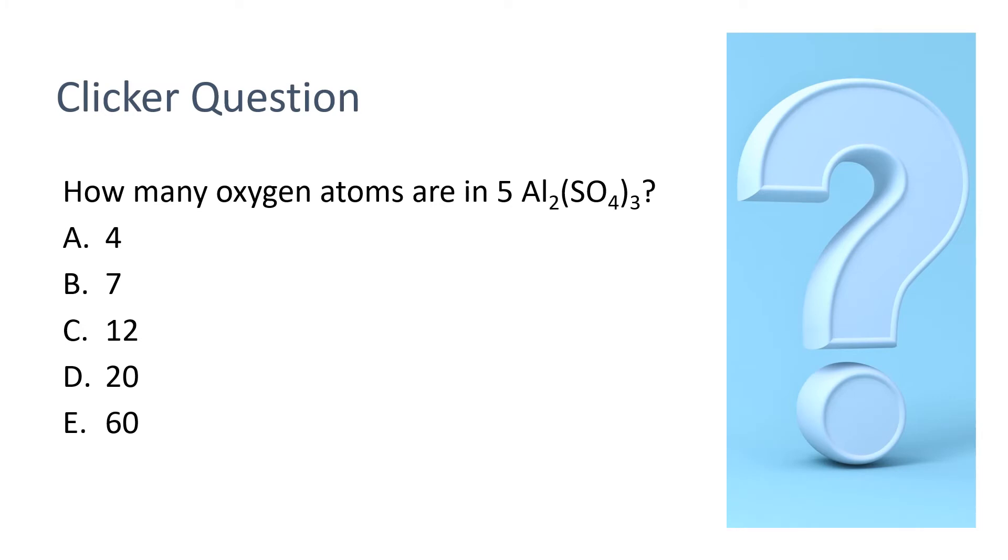This question asks us to determine how many atoms of oxygen are present in this expression, 5 Al2(SO4)3 or 5 aluminum sulfates. So we have oxygen present right here as part of the sulfate ion, and it has a subscript of 4. There's also a subscript outside of the parentheses, and there's this coefficient 5 out in front. The shortcut to figuring out how many oxygens are present is to simply multiply all these numbers.